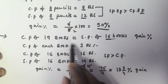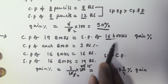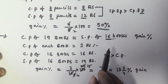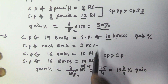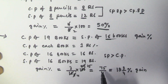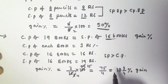Whenever you get this kind of problem where the cost price of some items is equal to the selling price of some other items, you can use this method to solve it. I hope you got this. Thank you very much for watching this video, and please subscribe to my channel. Bye.